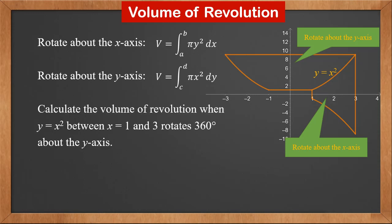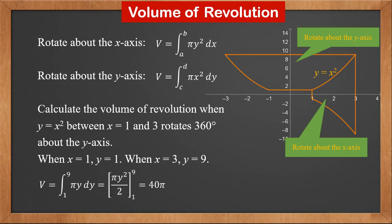Now let's calculate the volume of revolution when y equals x squared between x equals 1 and 3 rotates 360 degrees about the y-axis. First we need to find the range of y. When x equals 1, y is 1; when x equals 3, y is 9. These are the two limits of the integral. The volume is the integral of pi x squared dy. Since x squared equals y, the integral is pi y dy from 1 to 9. The result is pi y squared over 2. Putting in the two limits 1 and 9, we get the volume as 40 pi.